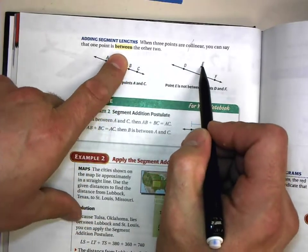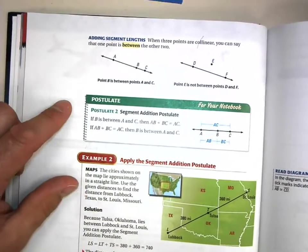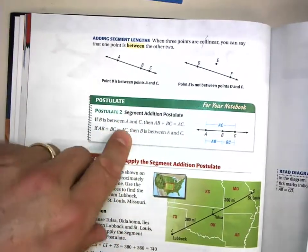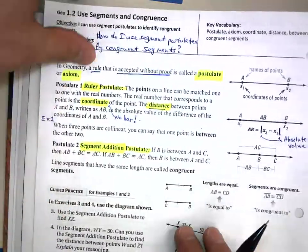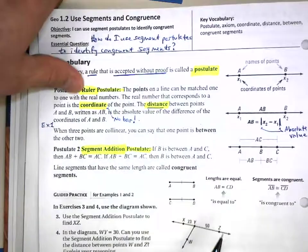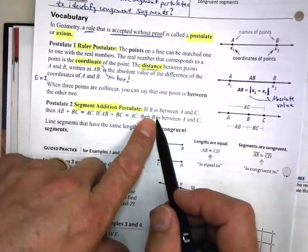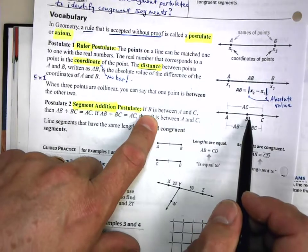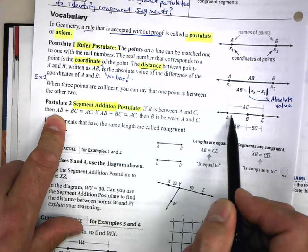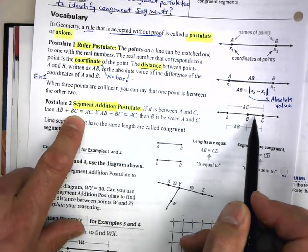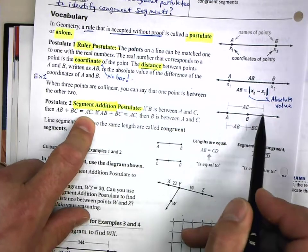Postulate number two: Segment Addition Postulate. It is a rule that is accepted without proof. If B is between A and C, then AB plus BC equals AC, this whole distance.